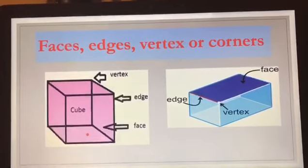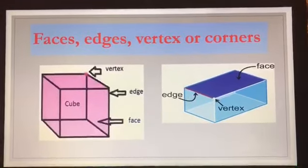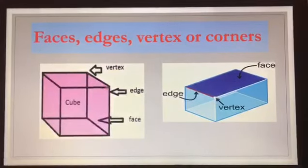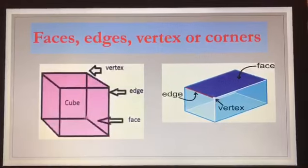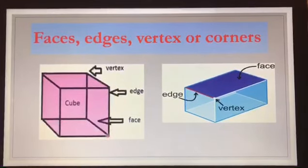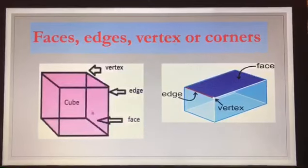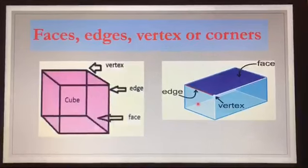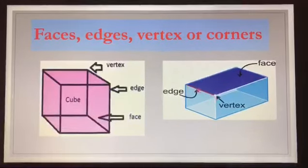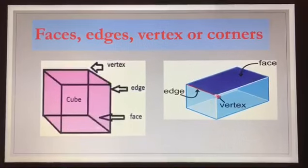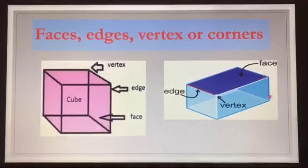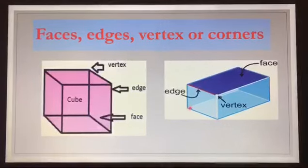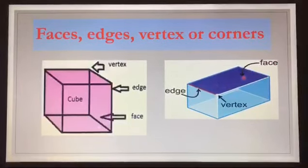So we have seen the vertex — the corners, the edges — the straight lines, and the face — the flat parts. The same goes for the rectangular prism. These are the edges, the straight lines. These are the corners or the vertex. Let's see the face — the flat one is called the face.